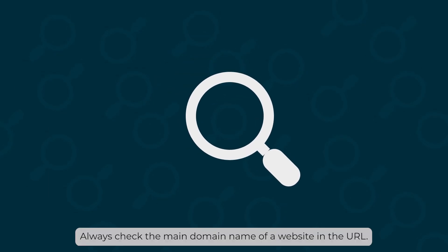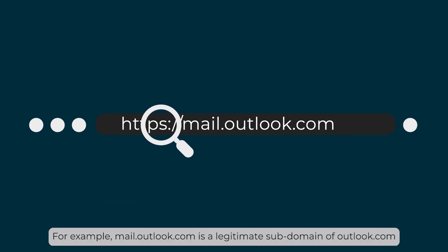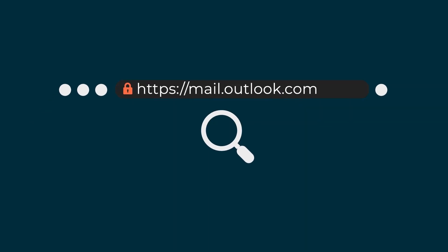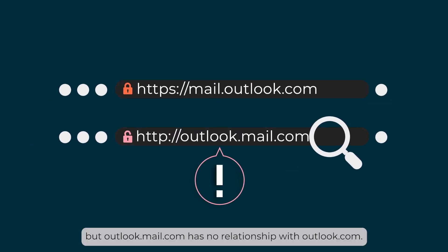Always check the main domain name of a website in the URL. For example, mail.outlook.com is a legitimate subdomain of outlook.com, but outlook.mail.com has no relationship with outlook.com.